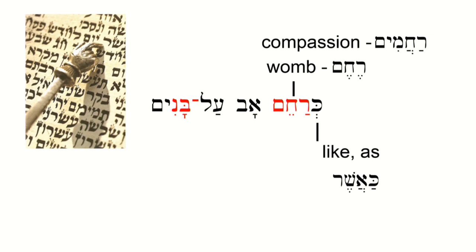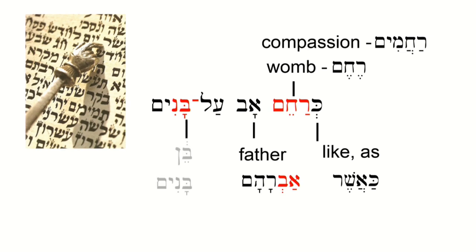I think it's a wonderful word — rachamim — compassion, like a mother having this incredible loving compassion for the child growing in her womb. Av means father. I point out that Abraham's name, Avraham, means father of a multitude — so Av means father. Al means on or upon. Now we get banim. Ben is singular for son, and banim is the plural. That's something you memorize when learning Hebrew: ben, banim.